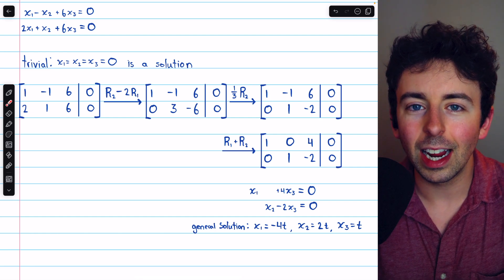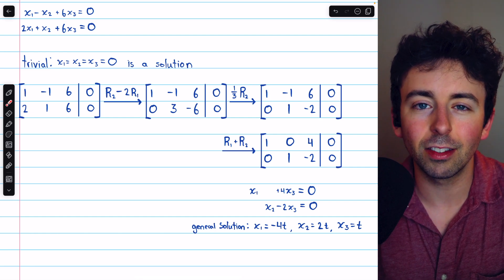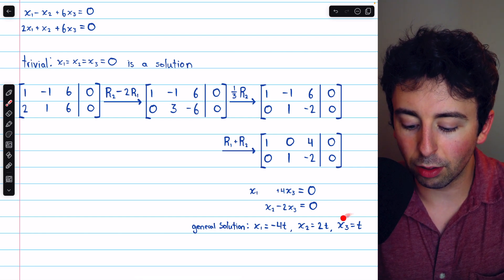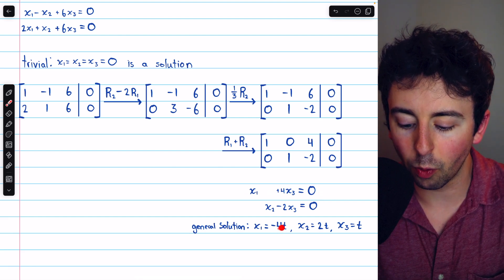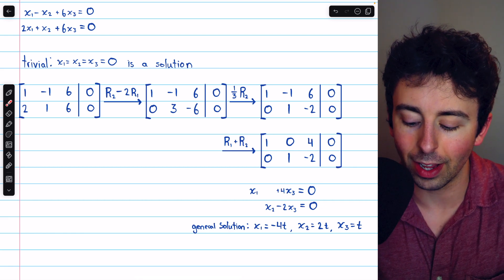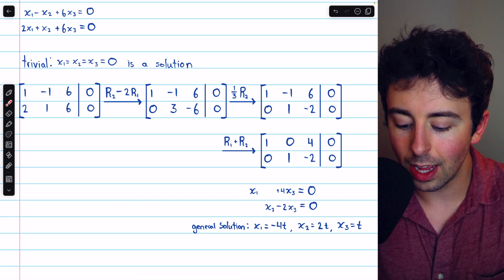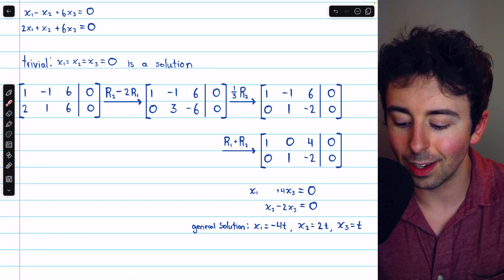It's free to be whatever it likes. And then we can calculate x1 and x2 accordingly. If x3 is equal to t, then from this equation, we see that x1 must equal negative 4t, just subtracting that to the right side. From this equation, x2 must equal positive 2t.